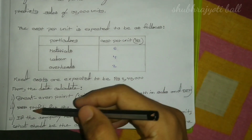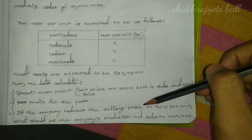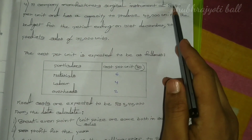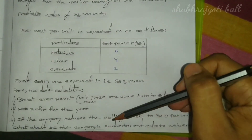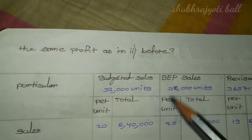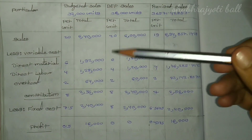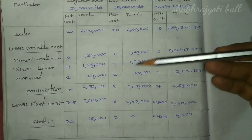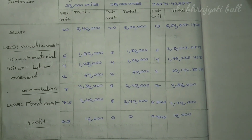And profit for the period — profit nikalna parega. If the company reduces the selling price to ₹19 per unit — so from ₹20 it becomes ₹19 — what should be the company's production and sales to achieve the same profit as before? So in the last part it was asked: if price goes from ₹20 to ₹19, profit should remain the same.